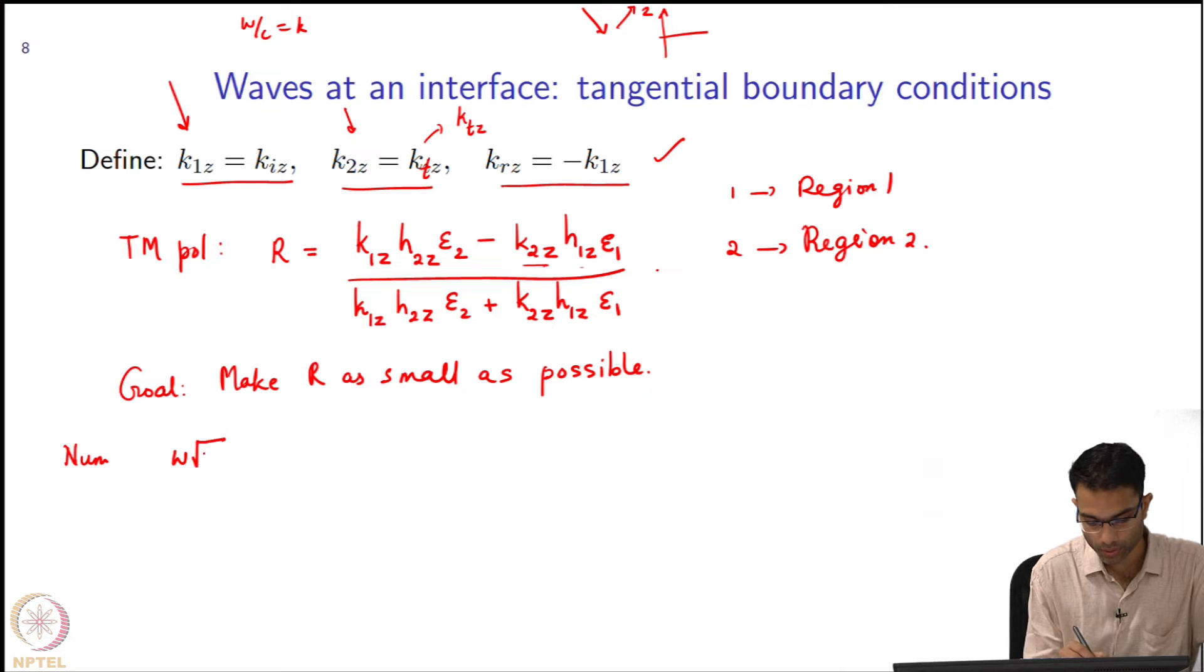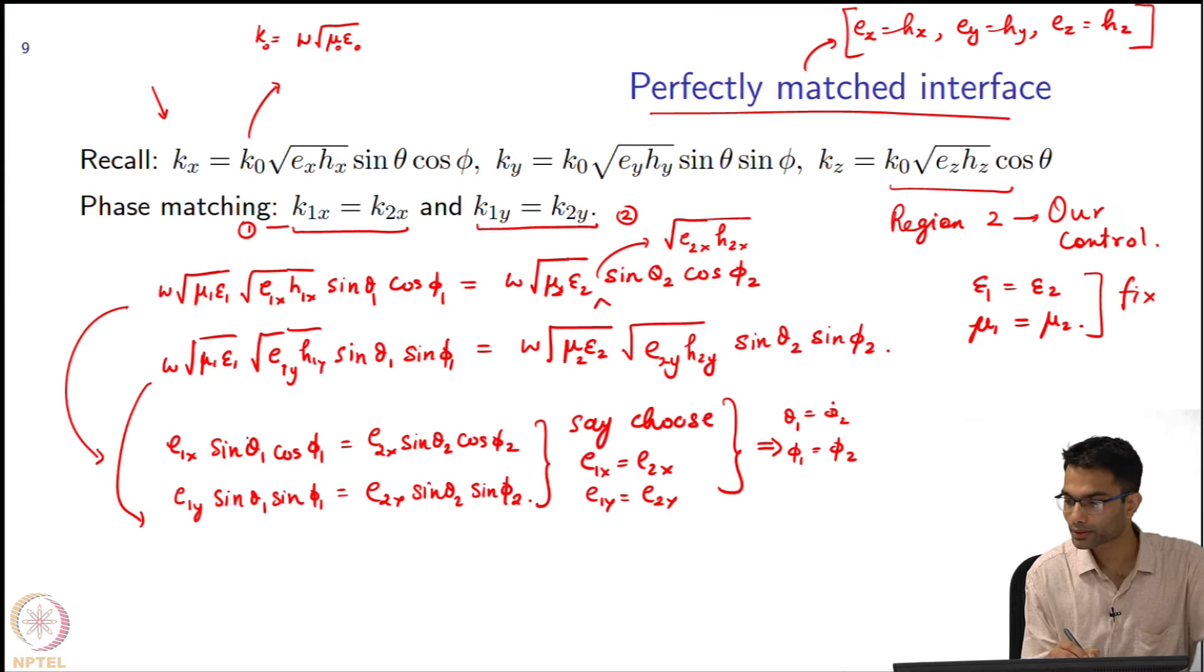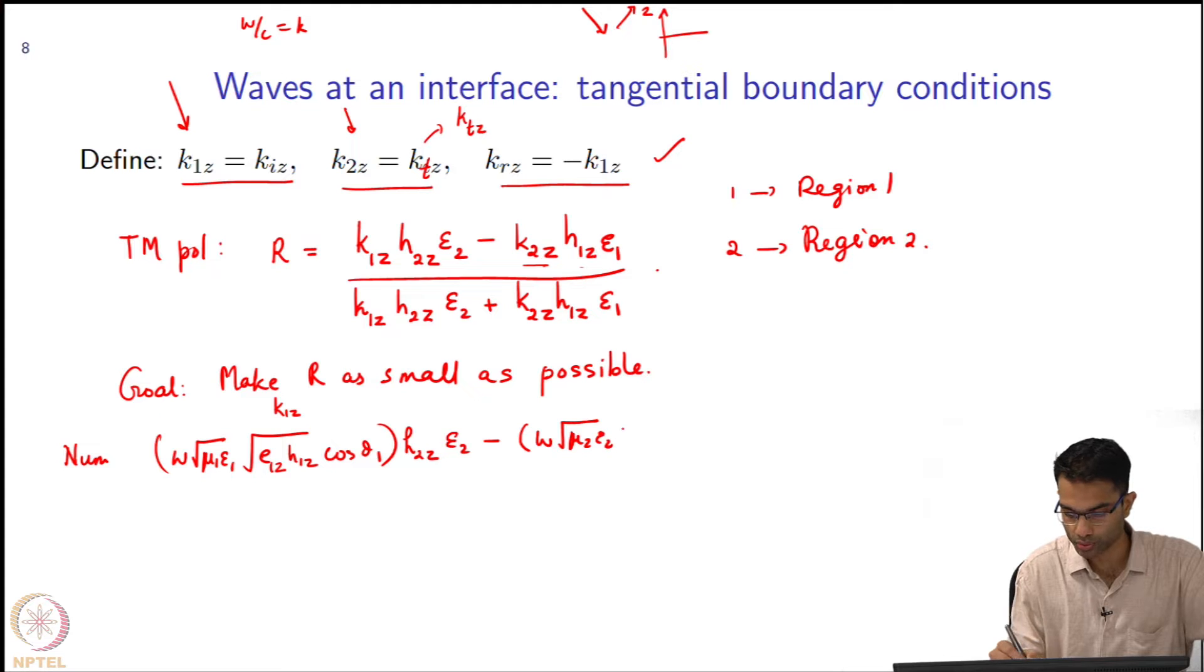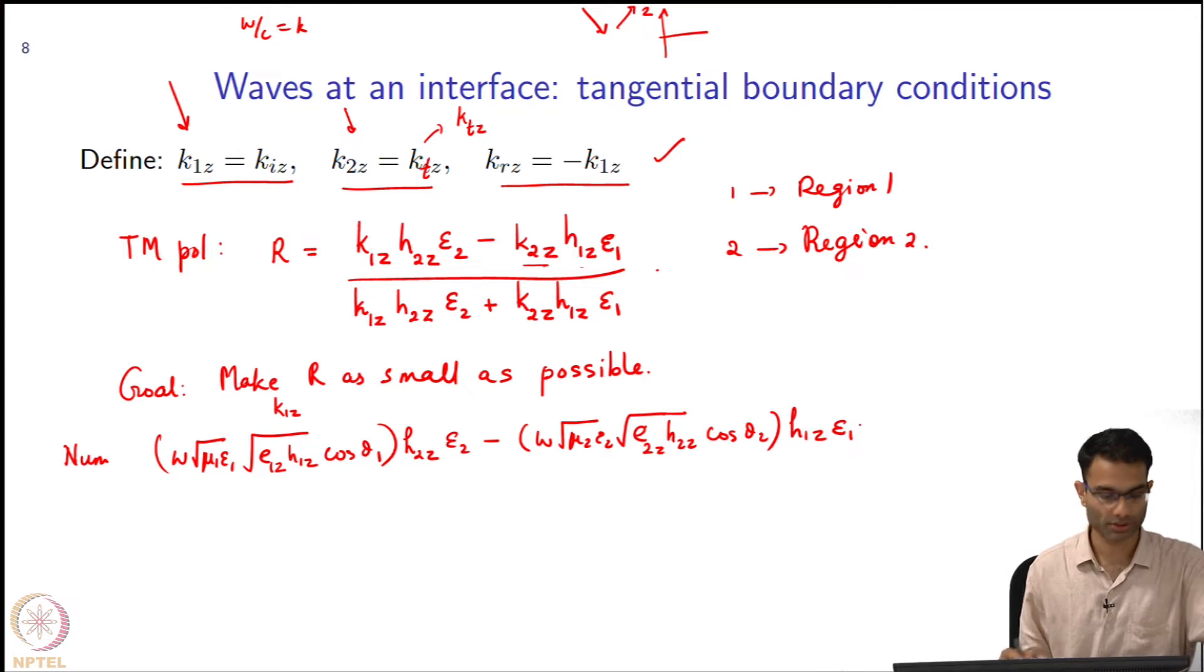So I have omega square root mu1 epsilon1 then square root of e1z h1z right and cos of theta1. This is my k1z multiplied by h2z epsilon2 minus the same thing again mu2 epsilon2 square root of e2z h2z cos theta2 h1z epsilon1. This is the numerator.